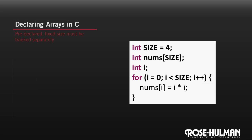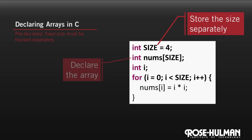Here's an example of declaring an array in C. The first thing to notice is that we have to store the size of the array separate from the array itself. Then when we declare the array, we tell C what size the array will be. C will allocate the memory for the array based on the size. So in this example, C will allocate exactly enough space to store four integers. No more, no less.